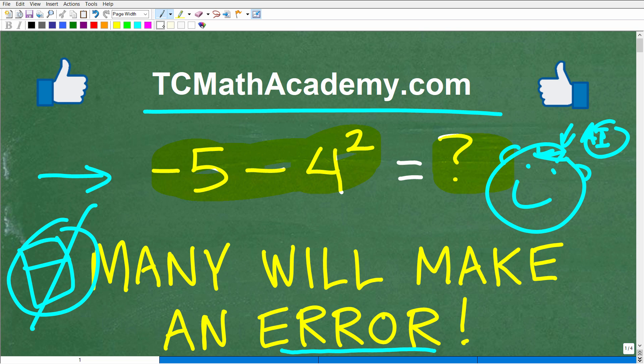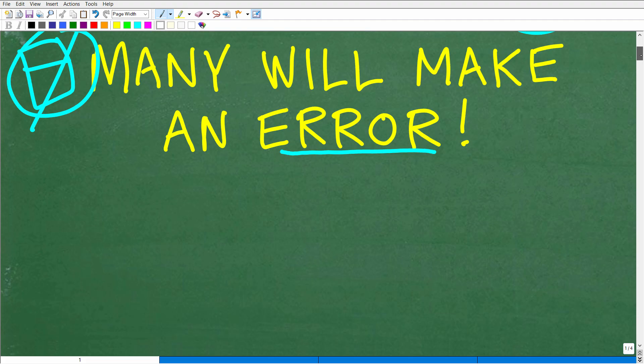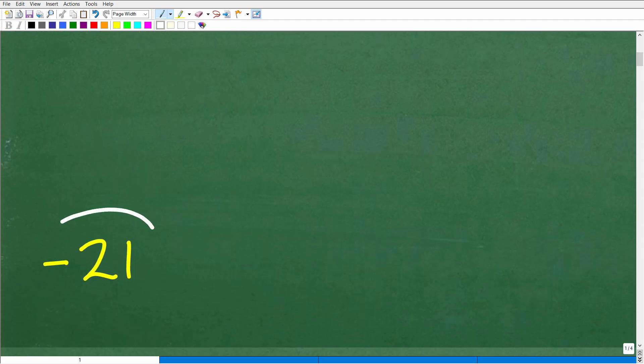And if this video helps you out, don't forget to like and subscribe, as that definitely helps me out. Okay, so let's go take a look at the answer. We have negative 5 minus 4 squared. What is the correct answer? Well, it is negative 21.